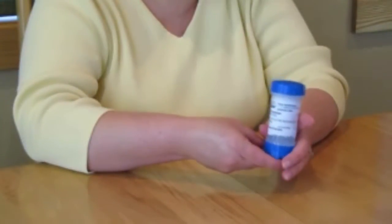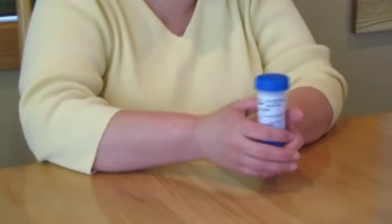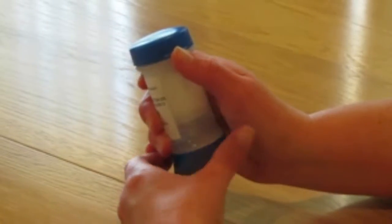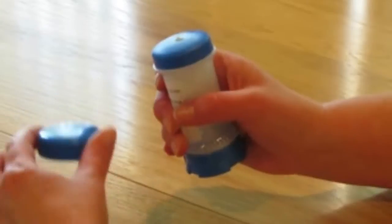Begin by popping off the cap of the ToppyClick container by placing your thumb under the tab on the protective outer cap and pressing upward.